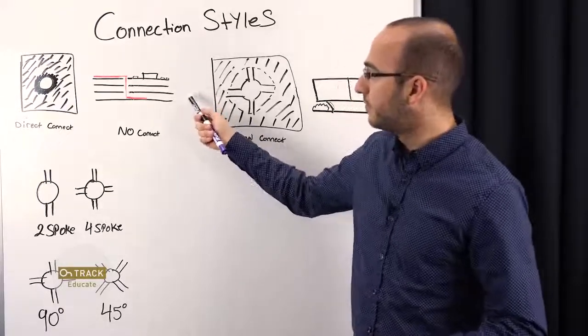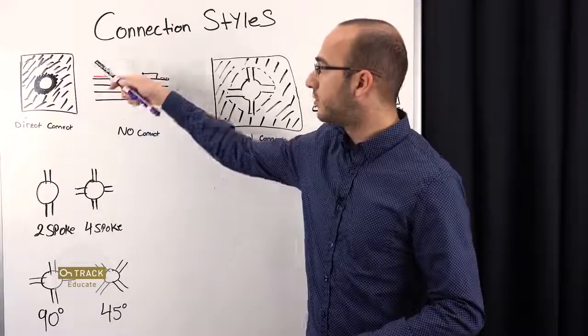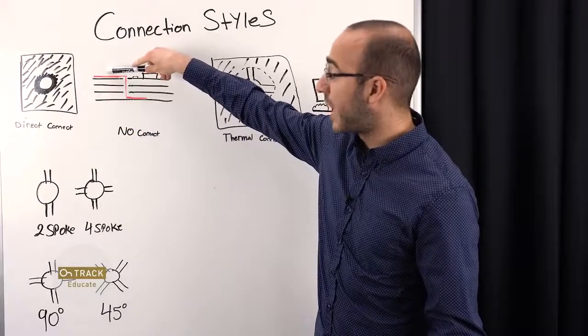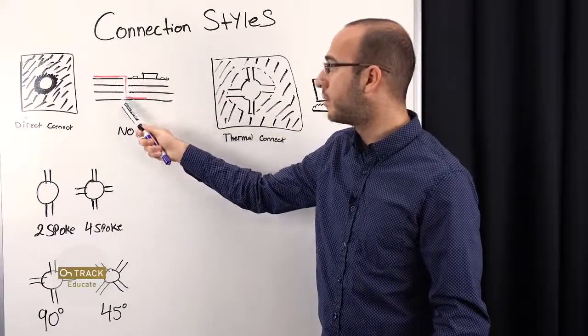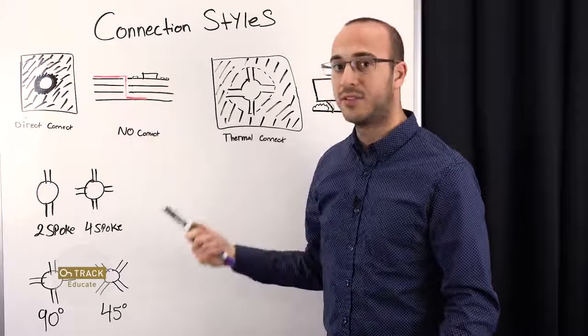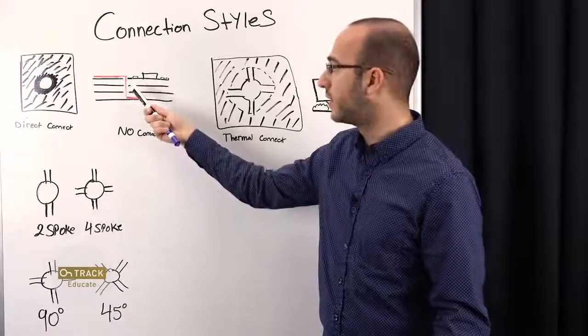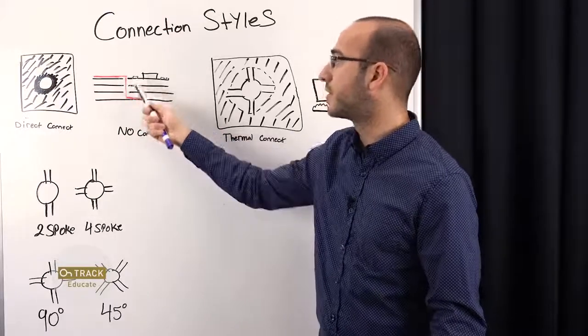If we're looking at our board from the side, and we want to have our signal go from the top layer to the bottom layer, we may have a Direct Connect at the top and bottom, but a No Connect in the inner layers. So we're avoiding connecting these inner layers. We're just going from the top to the bottom.